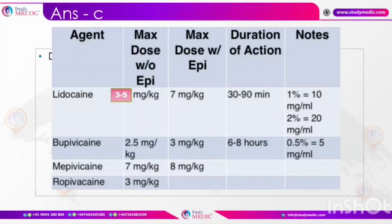Another area asked about is local anesthetic preparations, mainly lidocaine. If used without adrenaline, the maximum safe dosage is 3–5 mg per kg. If used with adrenaline, the maximum dosage increases to 7 mg per kg. The weight of the patient is usually given and the calculation needs to be done accordingly.